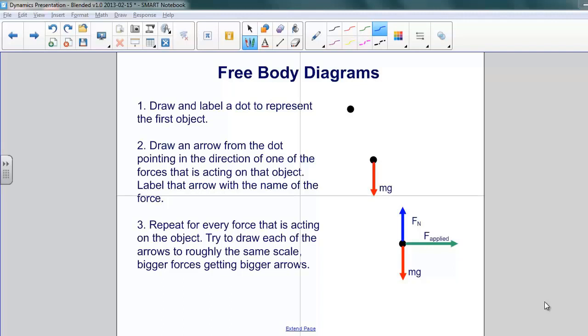First of all, draw a dot to represent the body in question. Once you've drawn a dot, begin drawing lines with arrows to represent each of the force vectors. Start with the first one. And once you've drawn that one, be sure and label it with the name of the force. In this case, it's weight. We've written mg. Notice that it's pointing in the downward direction.